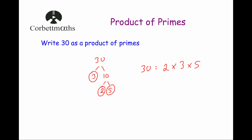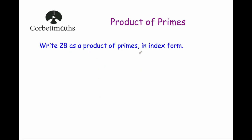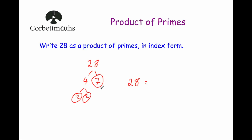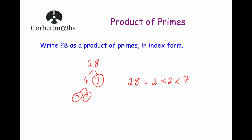Now let's write 28 as a product of primes in index form. First we'll write it as a product of primes, then look at the index form. For 28, I could go for 2 and 14, or 4 and 7 — I'll choose 4 and 7. Seven is prime so circle it; 4 equals 2 times 2, so write those down and circle both. So 28 = 2 × 2 × 7. In index form, instead of 2 × 2 × 7, we write 2² × 7, because index form uses indices or powers. So 28 = 2² × 7.